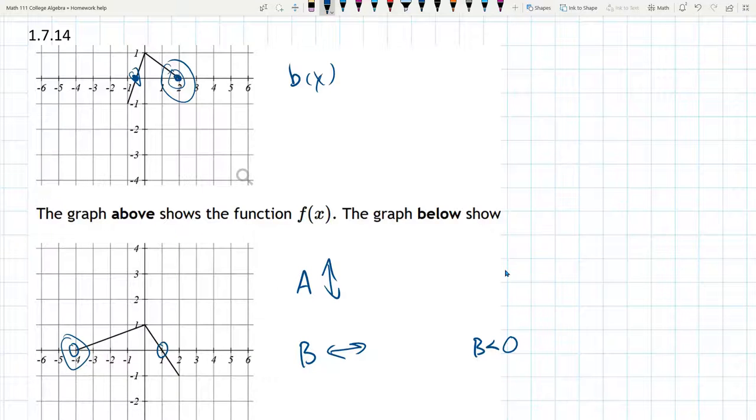And how do we do that? We multiply by negative 2, except we know it's the opposite of what it looks like. So b is actually going to be negative 1 half.